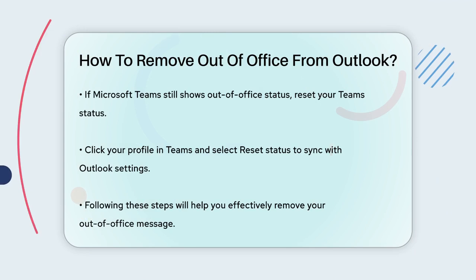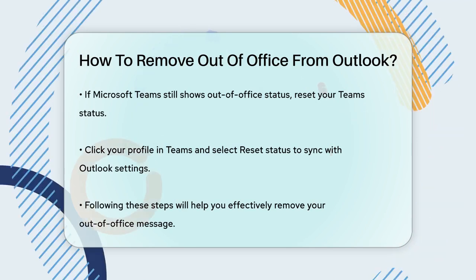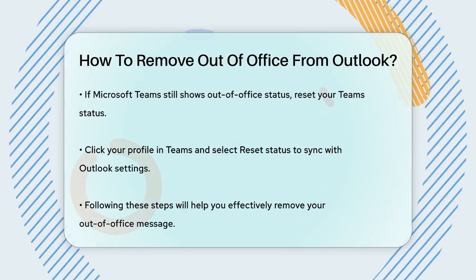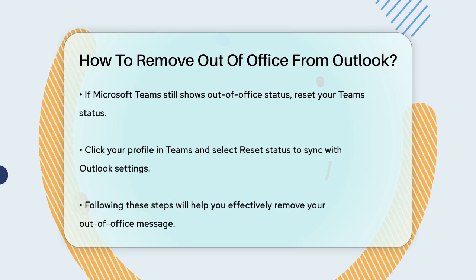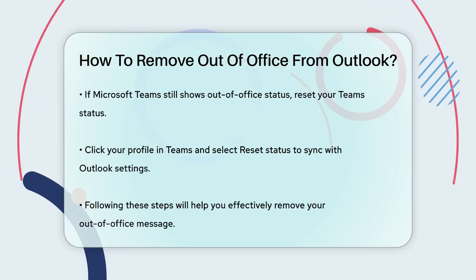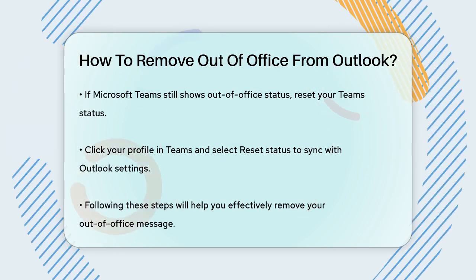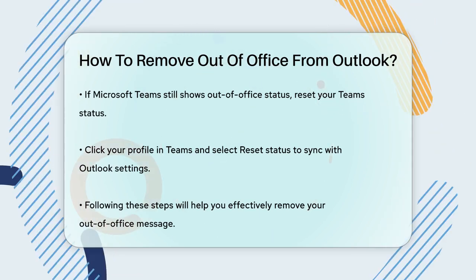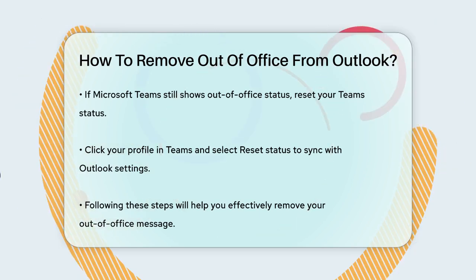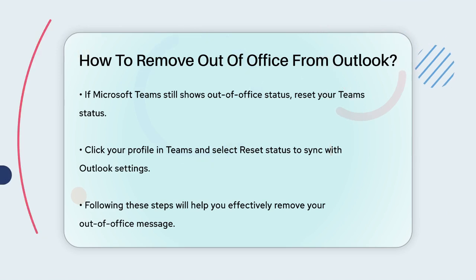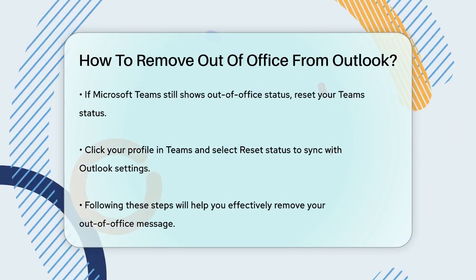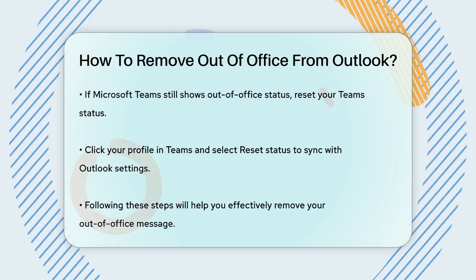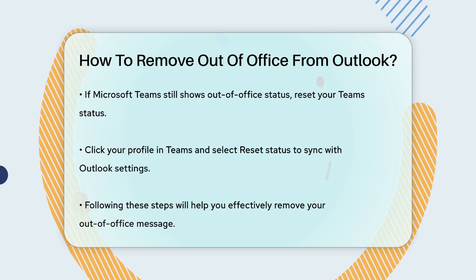Additionally, if your Microsoft Teams status is still showing as out-of-office even after you've turned off the automatic replies in Outlook, you might need to reset your Teams status. Open Microsoft Teams, click your profile at the top right, and select Reset Status to ensure it syncs correctly with your Outlook settings.